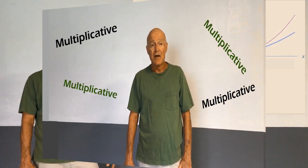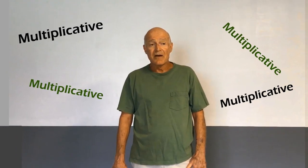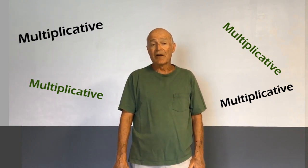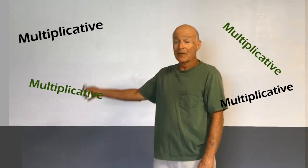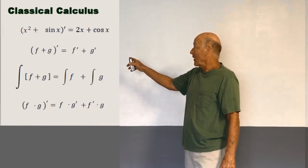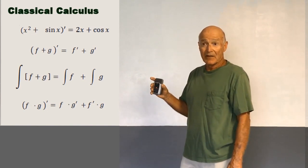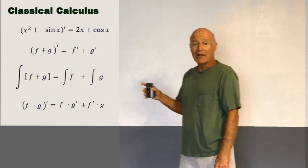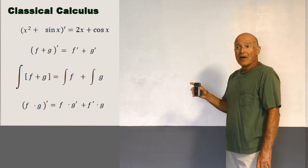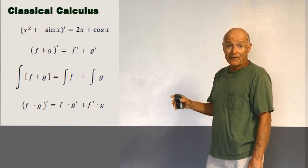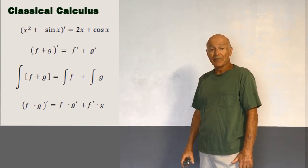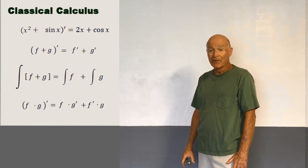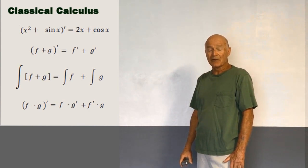When you studied classical calculus, you knew that the derivative of the sum of two functions is equal to the sum of their derivatives. For example, the derivative of x^2 + sin(x). How do you do it? You just take the derivative of x^2, then the derivative of sin(x), and add them together. The classical derivative of a sum is the sum of its classical derivatives.